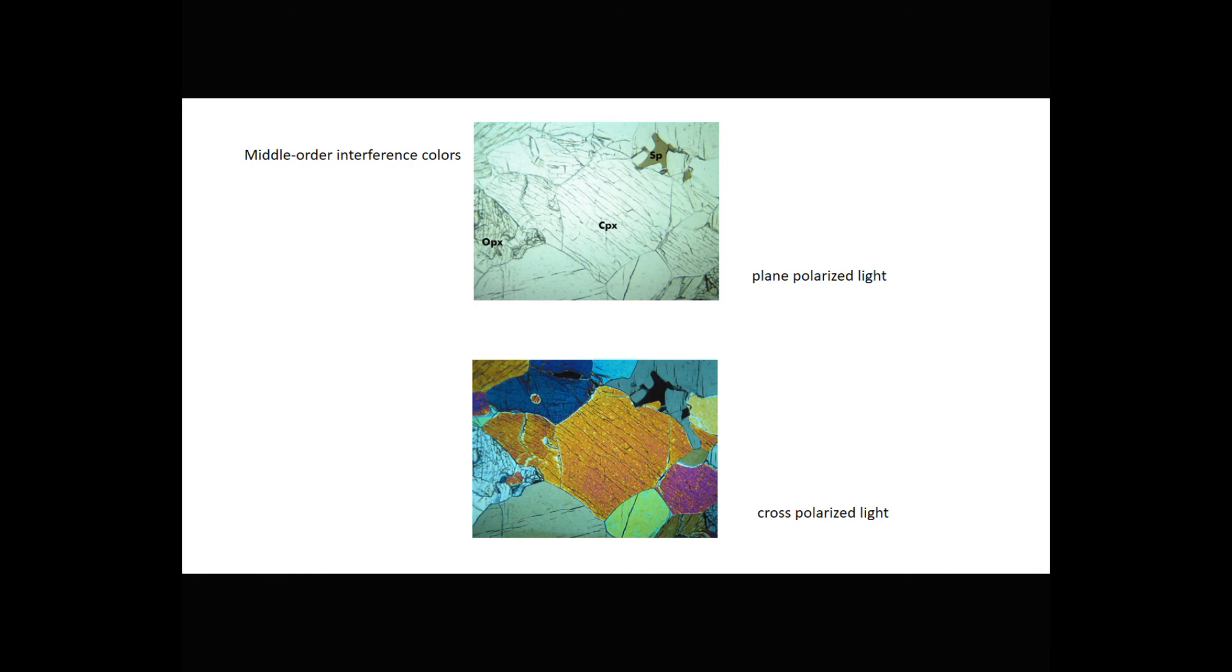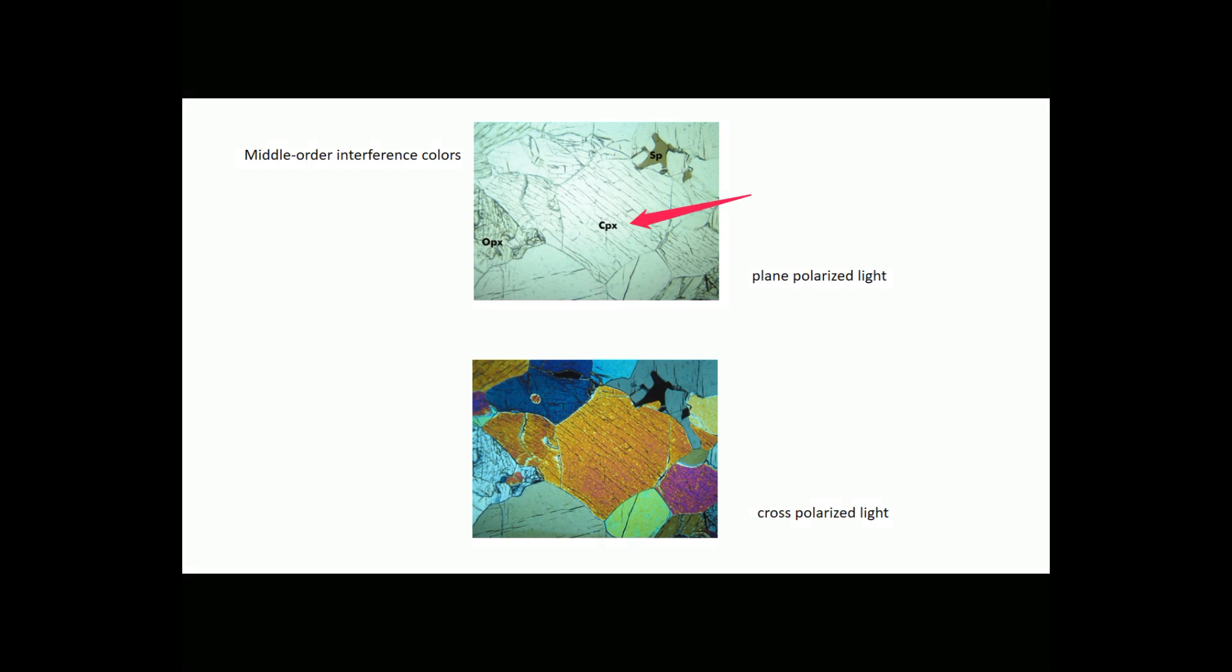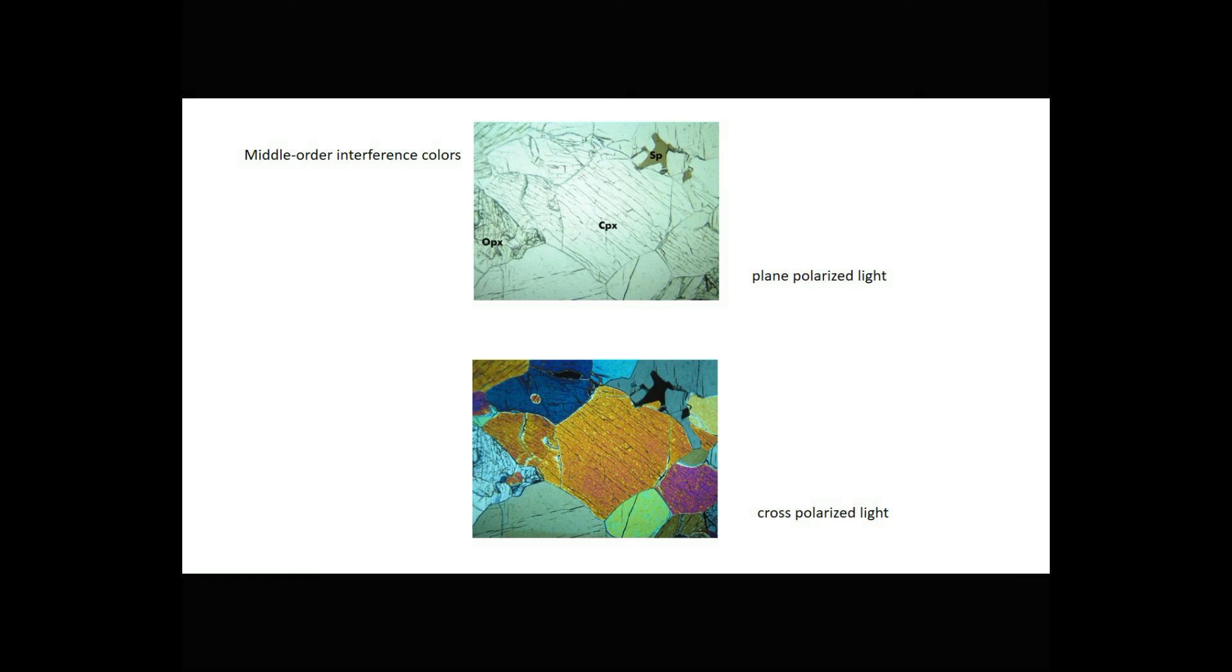Here are two views of the same thin section. The top one is plain polarized light. The bottom one is cross polarized light. In the top view, you can see a large grain of clinopyroxene in the middle that shows great cleavage. In the bottom, we see it has middle second-order colors. We can also see orthopyroxene in these photos. In the plain polarized view, it shows slightly greater relief than the clinopyroxene. And in the cross polarized view, we see first-order interference colors. Orthopyroxene commonly has first-order colors, and clinopyroxene commonly has higher-order colors, and that's one way we tell the two minerals apart.